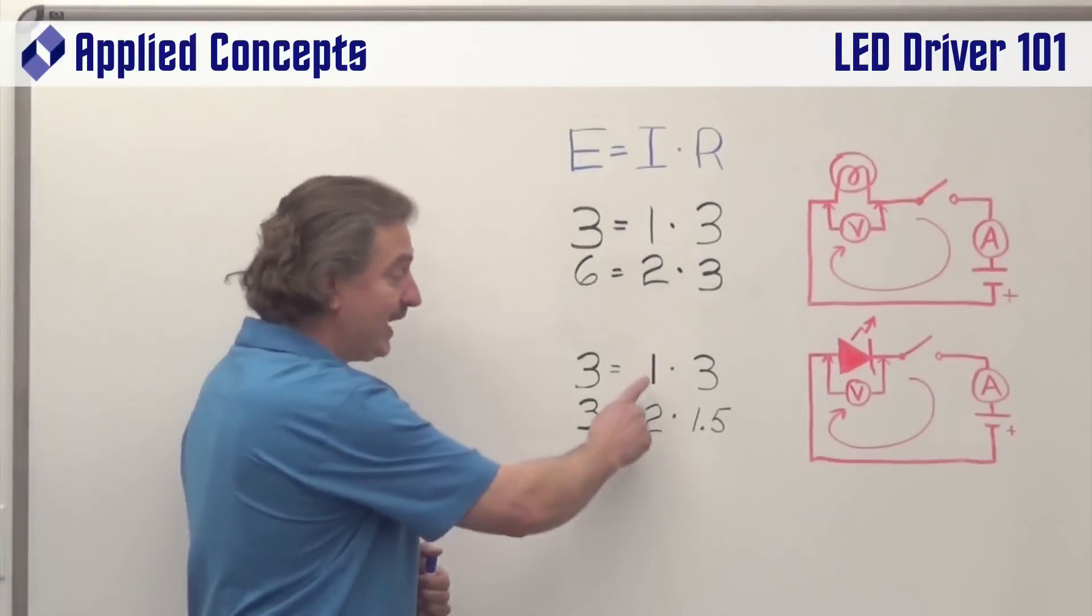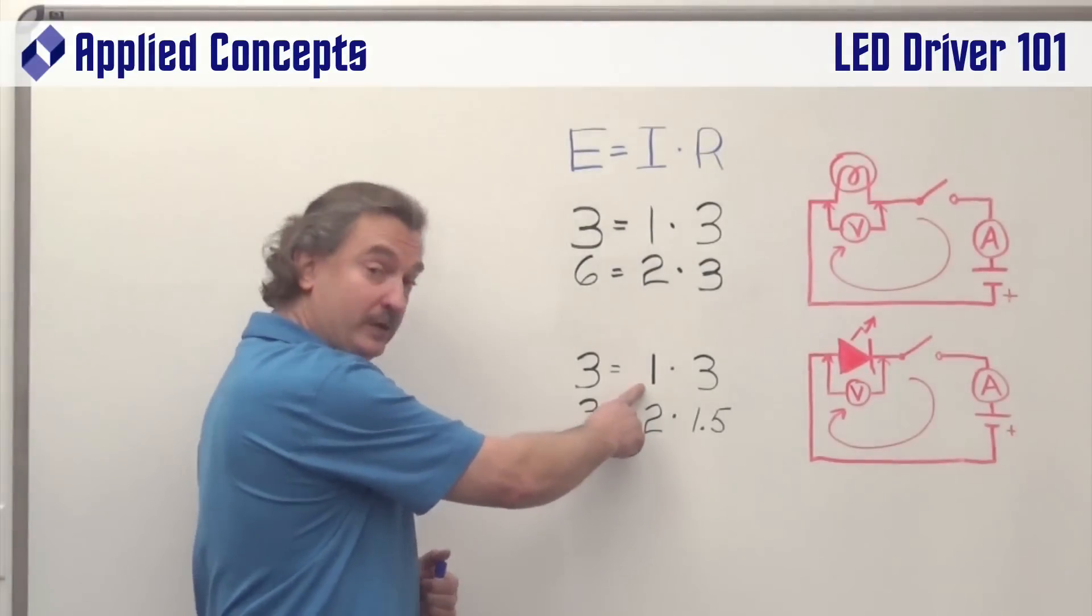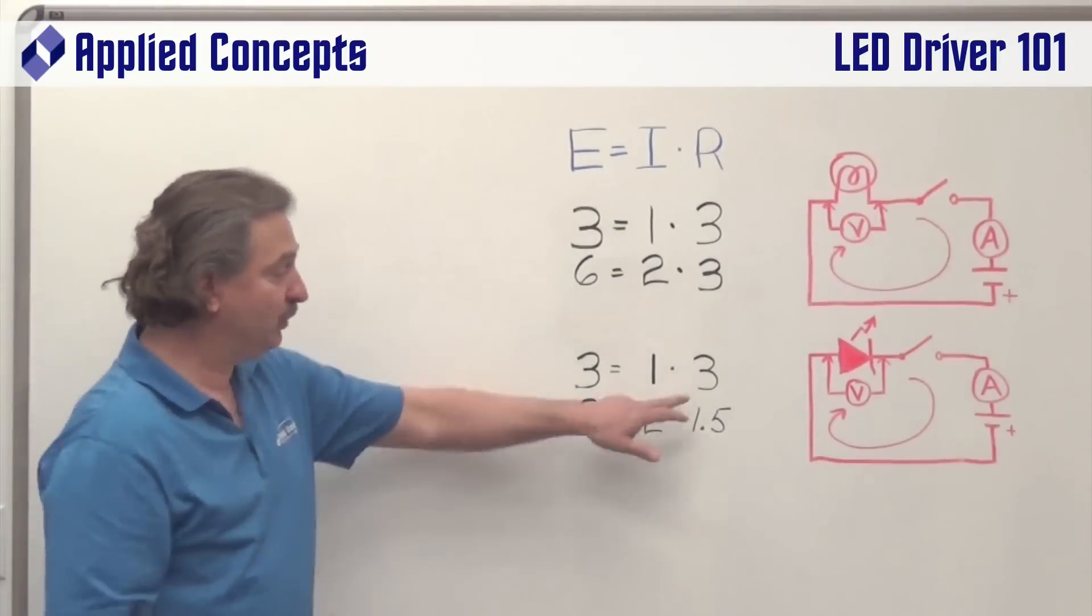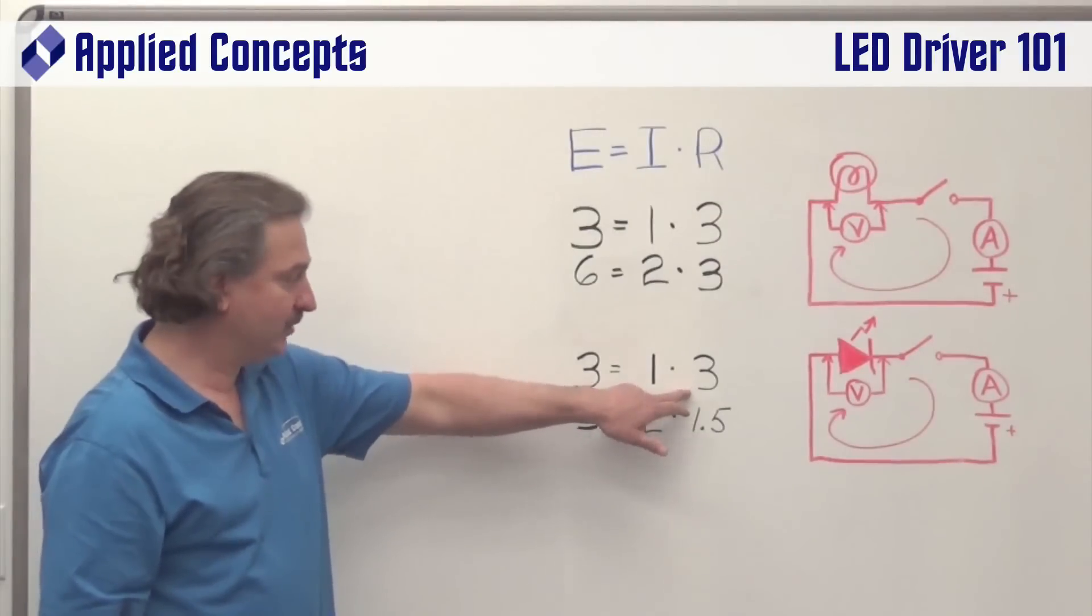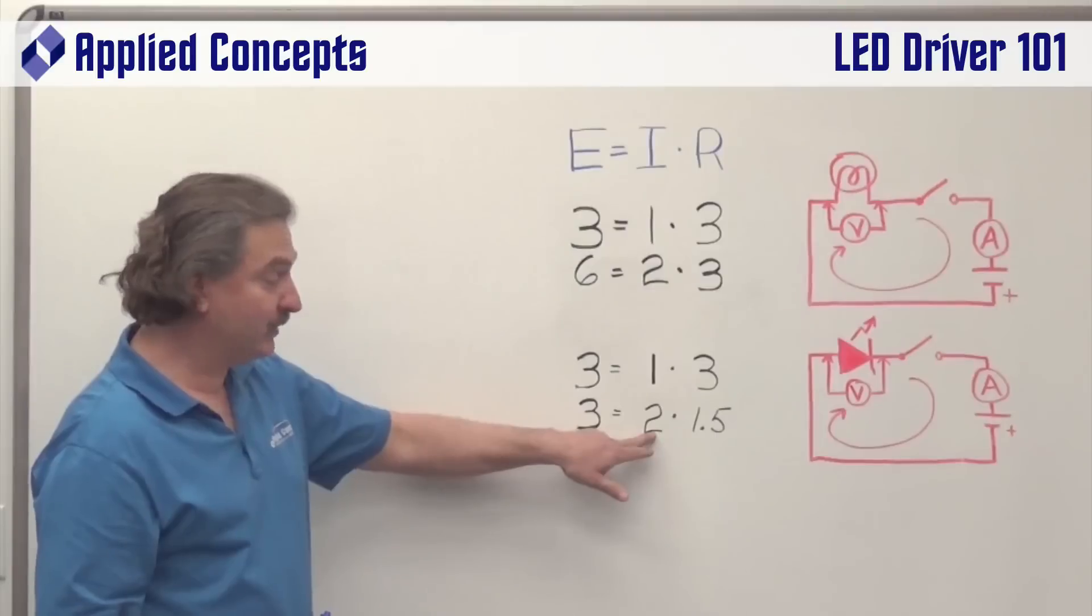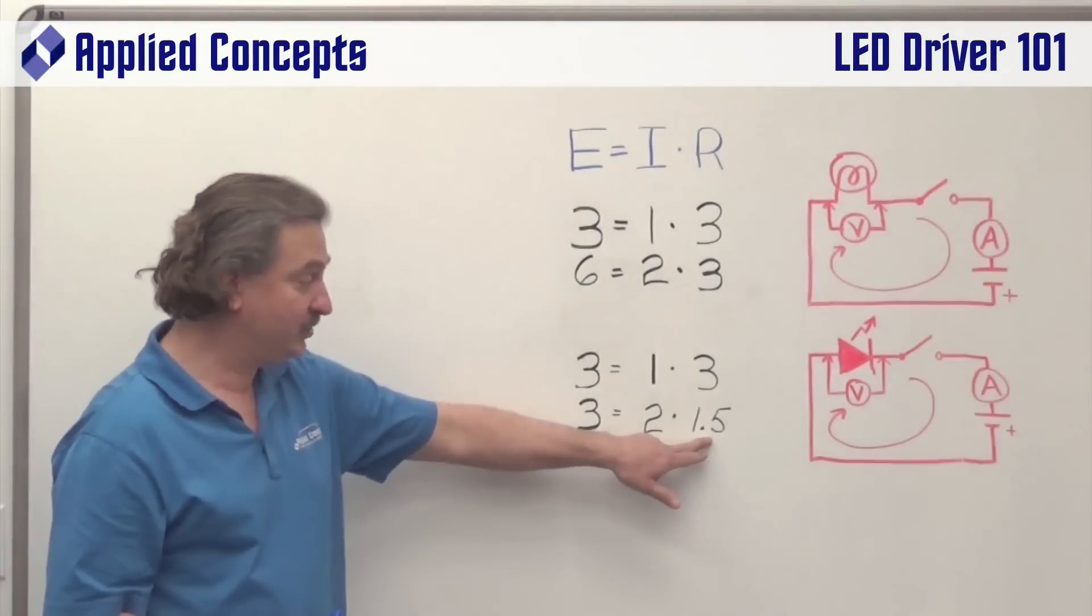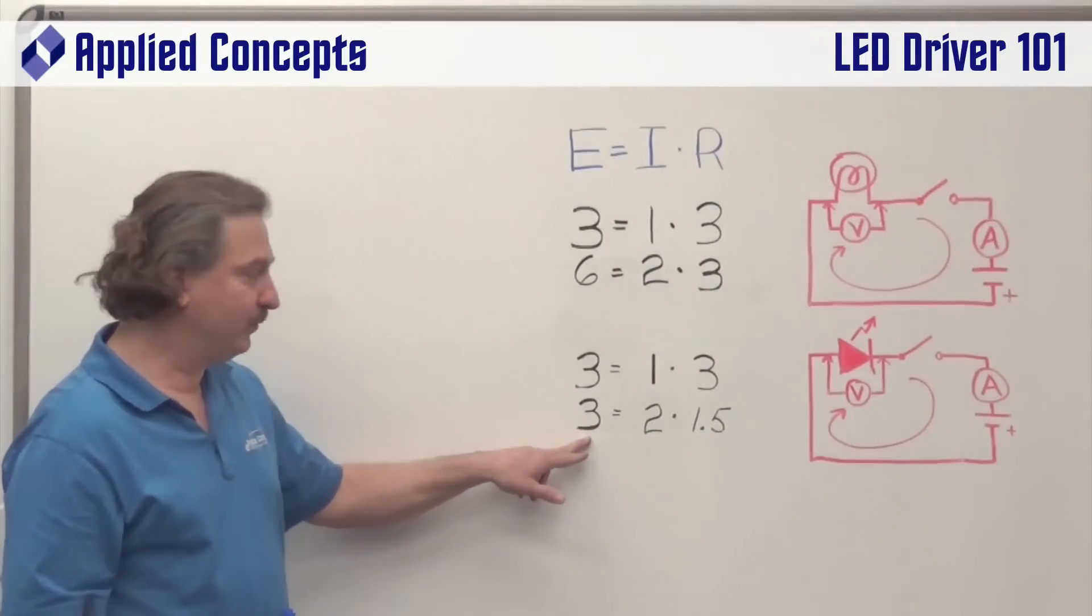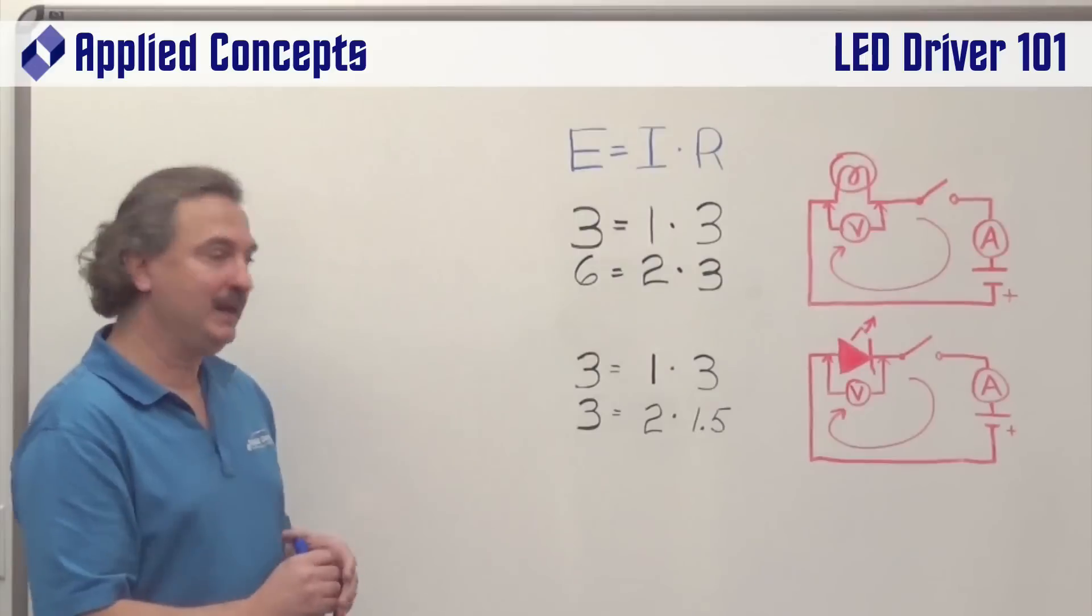Then if we were to drive 1 amp of current through this load, that would imply there's 3 ohms of impedance related to that load. Drive 2 amps of current, and we'd see that impedance must change to 1.5 ohms to be able to maintain that same voltage drop. So what's happening here?